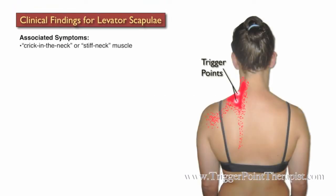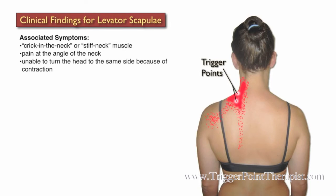Here are some associated symptoms for the Levator Scapula muscle. Dr. Travell refers to this muscle as the crick in the neck or the stiff neck muscle. Clients will typically complain of pain at the angle of the neck, just at the base of the neck and the shoulder area. They are unable to turn their head to the same side because of the contraction. If they're turning their head to the right and it hurts there, then they definitely have a problem in the right Levator Scapula.